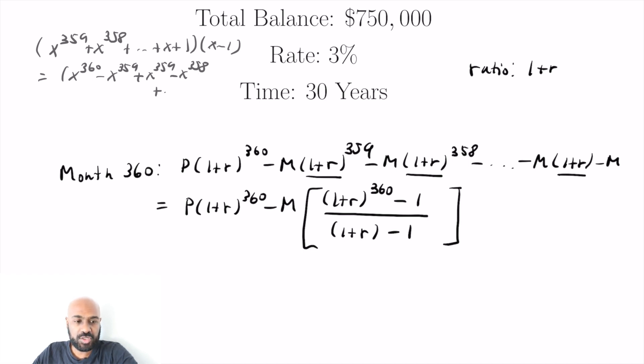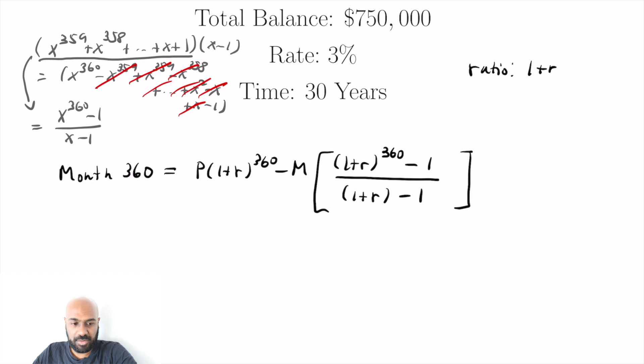we get expanding with the first term, X to the 360 minus X to the 359 and then plus X to the 359 minus X to the 358, etc. all the way down to the one term which gets multiplied by X minus or the X term which gets X squared minus X and then the one term which gets X minus one. Now all these intermediate terms cancel out with each other and we're only left with X to the 360 minus one. So the polynomial underlined here is X to the 360 minus one all divided by X minus one and that's exactly the expression that we have at our disposal here.